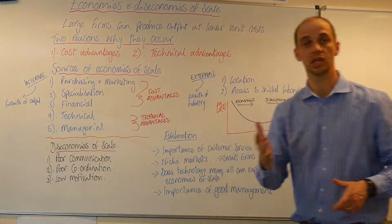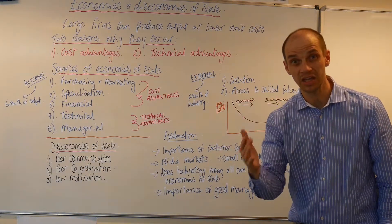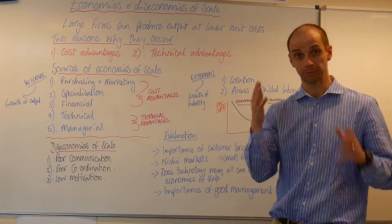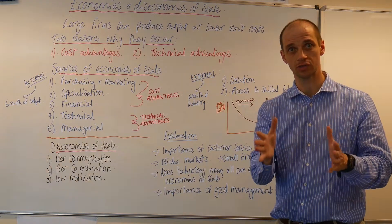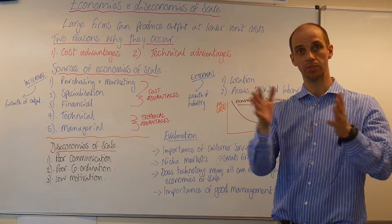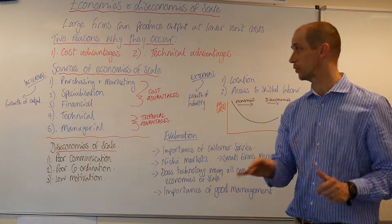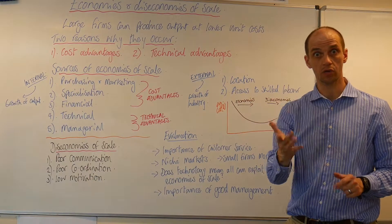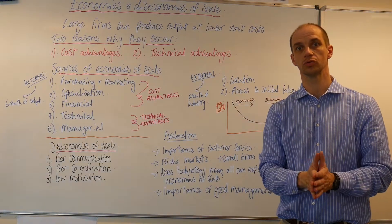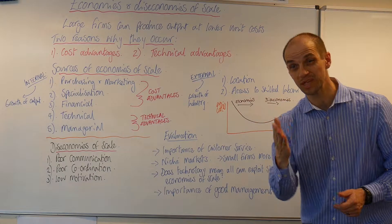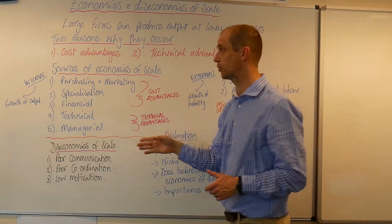Then you've got marketing economies of scale. Here you're talking about perhaps a national chain of restaurants which decides to take out a full-page advert in a newspaper. In doing so, it can divide the cost of that advertising by each of its restaurants across the country, meaning the average cost of that marketing is much lower.